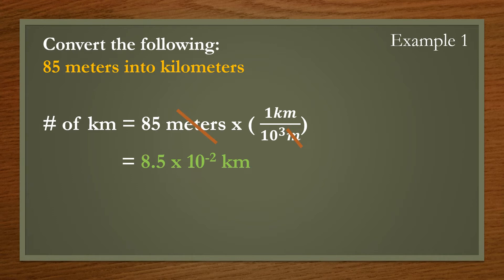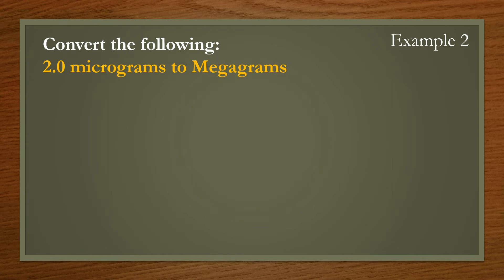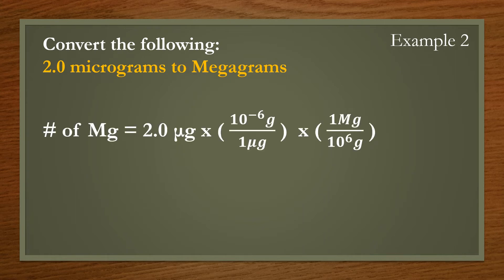Example 2: convert 2.0 micrograms to megagrams. From our earlier tip, we should try to reach the base unit first and then convert accordingly. From micrograms to grams, we multiply by 10 to the power of negative 6 to reach our base unit of grams. From there, we divide by 10 to the power of 6 to convert from grams to megagrams, giving us a final answer of 2.0 times 10 to the power of negative 12 megagrams.